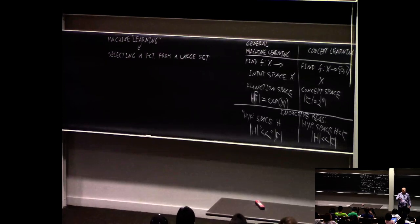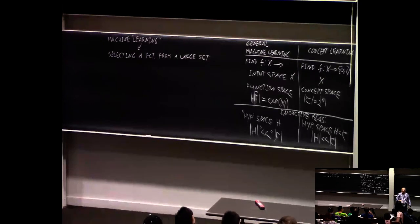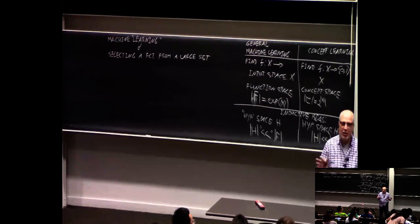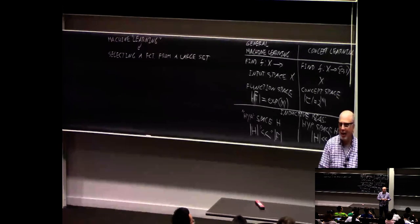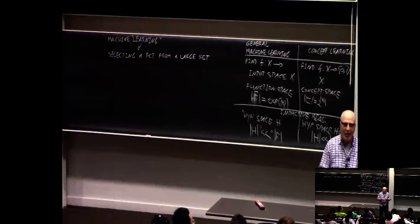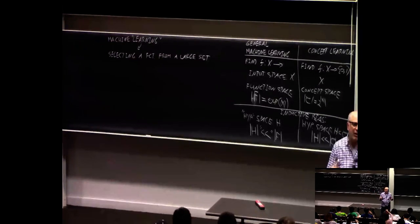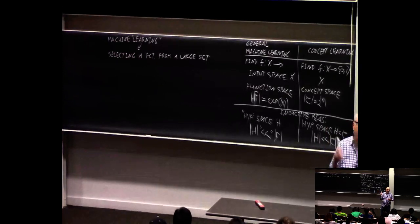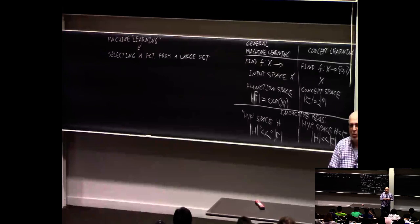You're lucky to be here today because this is the only important lecture in the course. If you remember one thing from this lecture, you can go home for the rest. I'm kind of serious in the sense that the rest is math — math is important, but the rest is details. The important thing about machine learning we started talking about at the end of last lecture is inductive bias.